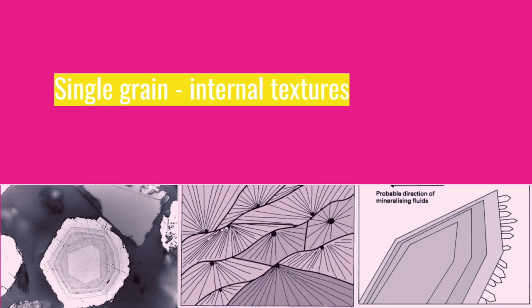Next we have Stoss-side growth, which is a form of zoning but with bands on one or more sides of a crystal that are wider than on the other sides. This indicates a preferential deposition direction — that is, the direction of fluid movement that resulted in the build-up of wider bands. This texture is common in crystals growing in open cavities and vugs. Subparallel and radial growth texture is noted in minerals which naturally grow in open spaces and form columnar, prismatic or leaf-like forms. Development of this texture requires uniform supply of material from all directions, as opposed to Stoss-side growth.